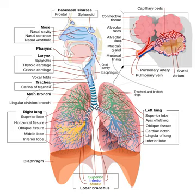Diffusion of gases is effective over small distances but not over larger ones, which is one of the reasons insects are all relatively small. Insects which do not have spiracles and trachea, such as some collembola, breathe directly through their skins, also by diffusion of gases. The number of spiracles an insect has is variable between species, however they always come in pairs, one on each side of the body, and usually one pair per segment.